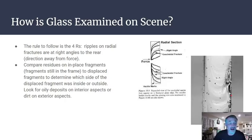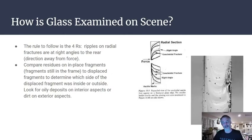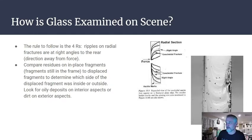By comparing residues on fragments still in the frame, you can sometimes determine which was the inside and which was the outside — for example, a thin layer of desert dust on the outside surface, or oil and other markings that indicate orientation.